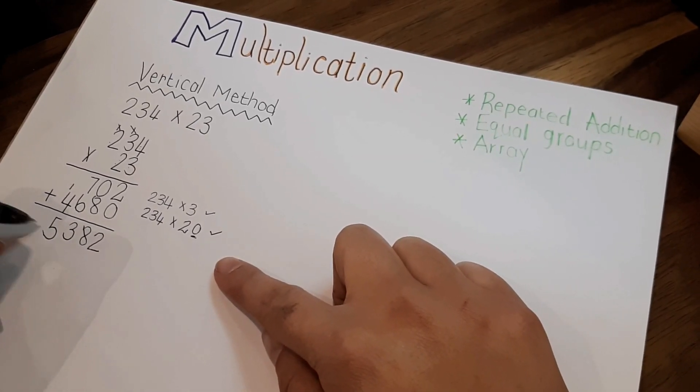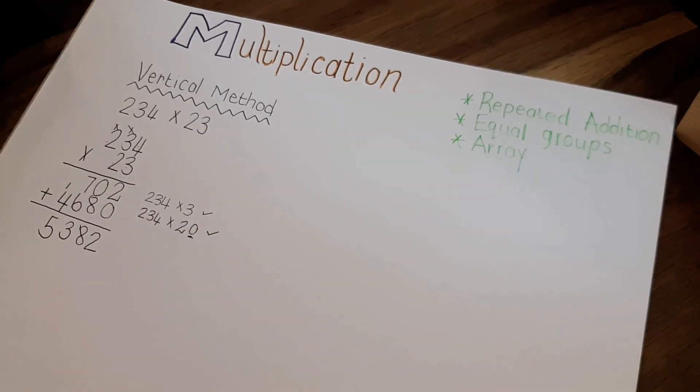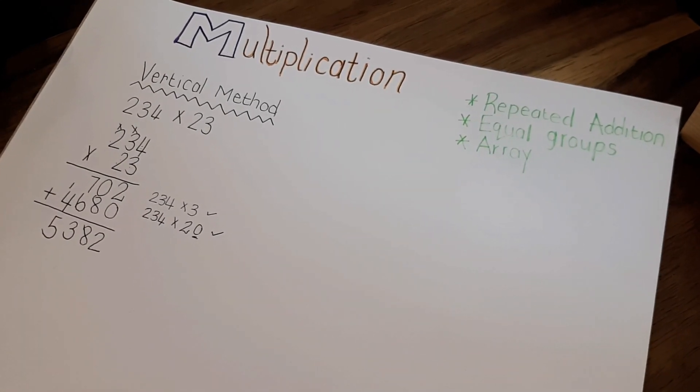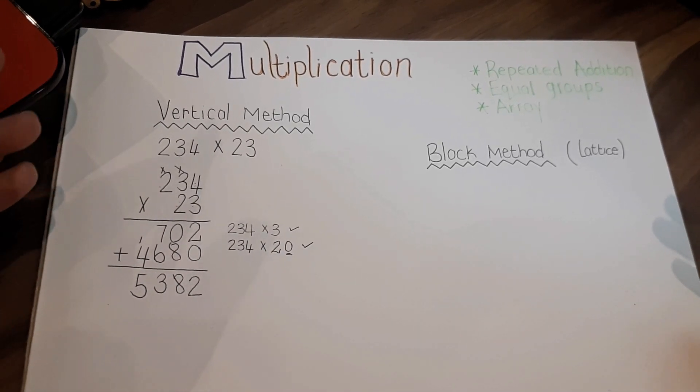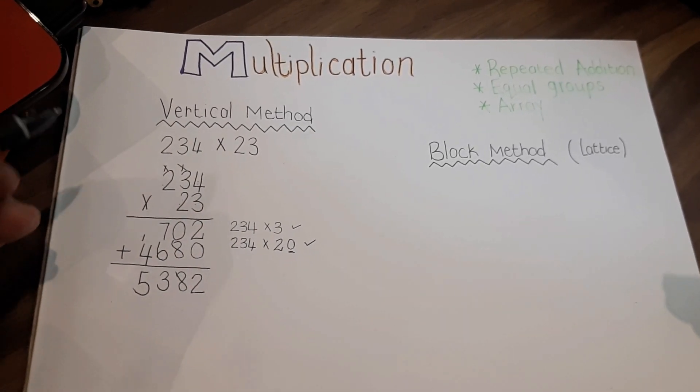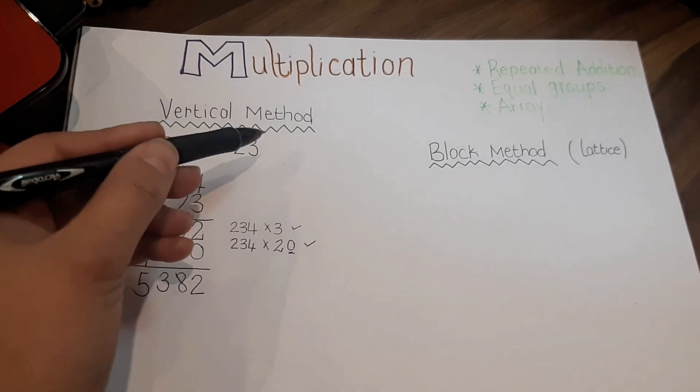4 plus 1 is 5. And there you go, that's basic simple vertical method. So next we are going to do the block method. It's actually known as the lattice method.